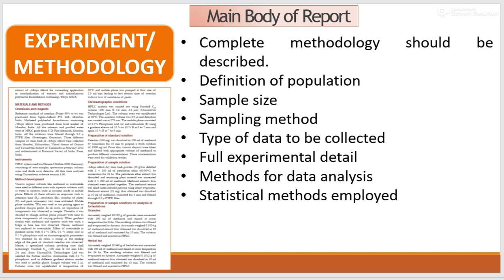Next is the experiment or methodology section. Complete methodology should be described in the experimental part. The definition of population should be stated, and sample size and sampling method should be mentioned. The type of data to be collected and full experimental detail should be provided. Methods for data analysis and statistical methods employed should be described in detail and in a clear manner.